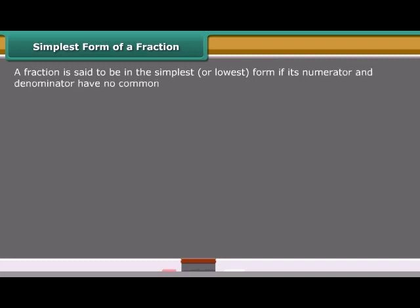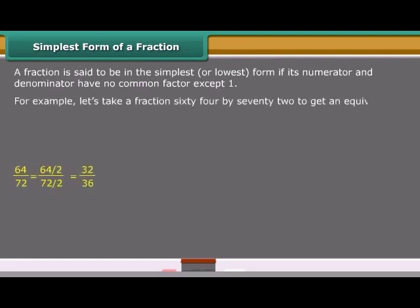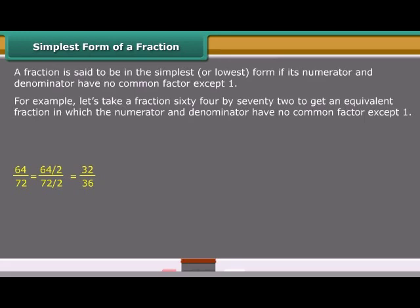A fraction is said to be in the simplest or lowest form if its numerator and denominator have no common factor except one. For example, let us take a fraction 64 by 72 to get an equivalent fraction in which the numerator and denominator have no common factor except one.